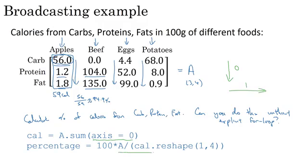This command is an example of Python broadcasting, where you take a three by four matrix A and divide it by a one by four matrix. Technically, after the first line of code, the variable cal is already a one by four matrix, so you don't technically need to call reshape again — it's a little redundant. But when writing Python code, if I'm not entirely sure of my matrix dimensions, I often call reshape just to make sure it's the right shape. The reshape command is a constant-time, order-one operation, so it's very cheap to call. Don't be shy about using reshape to make sure your matrices are the size you need.